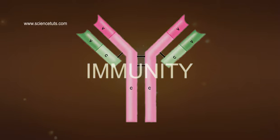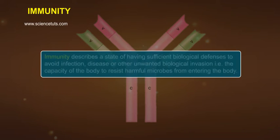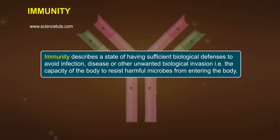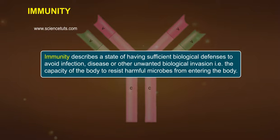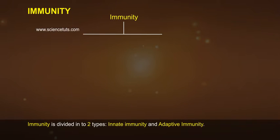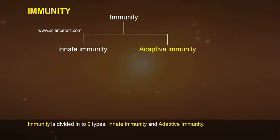Immunity describes a state of having sufficient biological defences to avoid infection, disease, or other unwanted biological invasion — that is, the capacity of the body to resist harmful microbes from entering the body. Immunity is divided into two types: innate immunity and adaptive immunity.